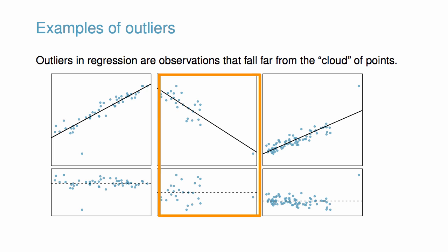In the middle panel, there is one outlier on the right, though it is quite close to the least squares line, suggesting that it wasn't very influential.